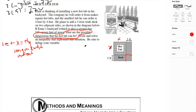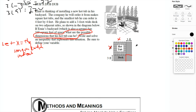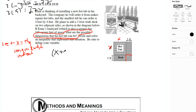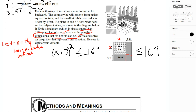The total area including the deck would be (x+3) times (x+3), because there are 3 more feet on two sides. That area must fit within the backyard constraint of 169 square feet. So the inequality is (x+3)² ≤ 169.